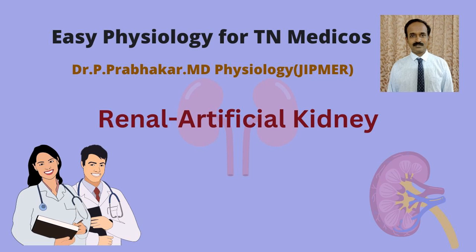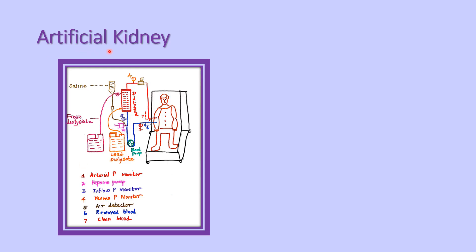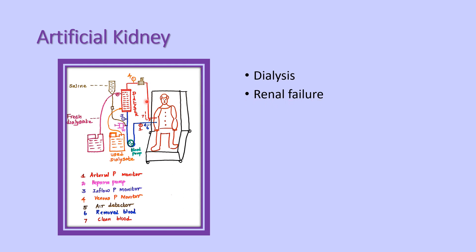Good morning. In this video we are going to discuss about the artificial kidney. The artificial kidney is the machine used for dialysis. Dialysis is the removal of the excessive waste products and maintains the normal blood volume and electrolyte concentration in renal failure patients. So dialysis is mainly done for the renal failure patient.